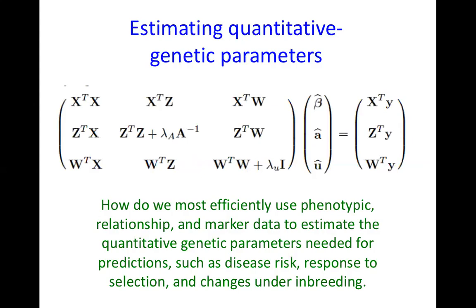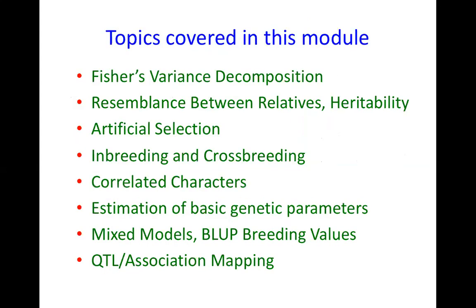We'll talk about estimating quantitative genetic parameters. Here are the famous Henderson mixed model equations we'll discuss, along with ANOVA and other methods. In particular, we'll talk about how we most effectively use phenotypic, relationship, and marker data to estimate parameters needed to predict disease risk, predict response to selection, and look at changes under inbreeding.